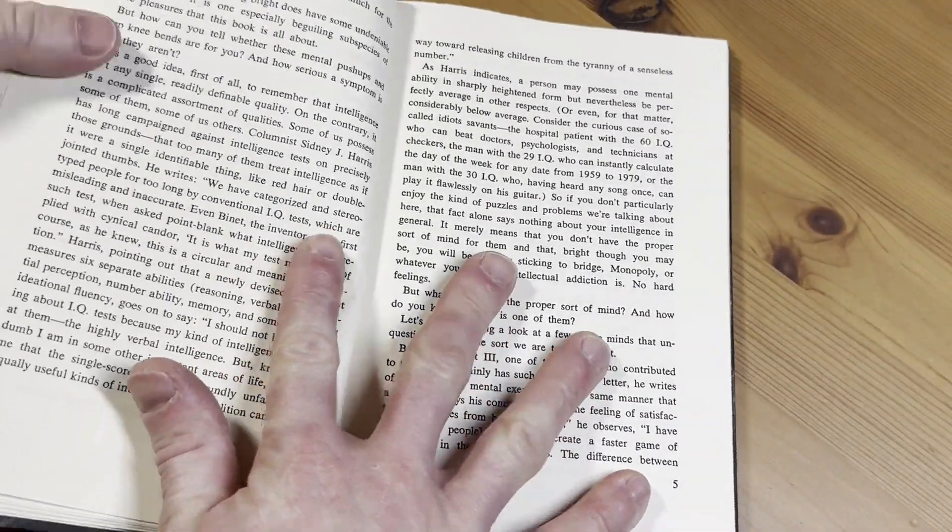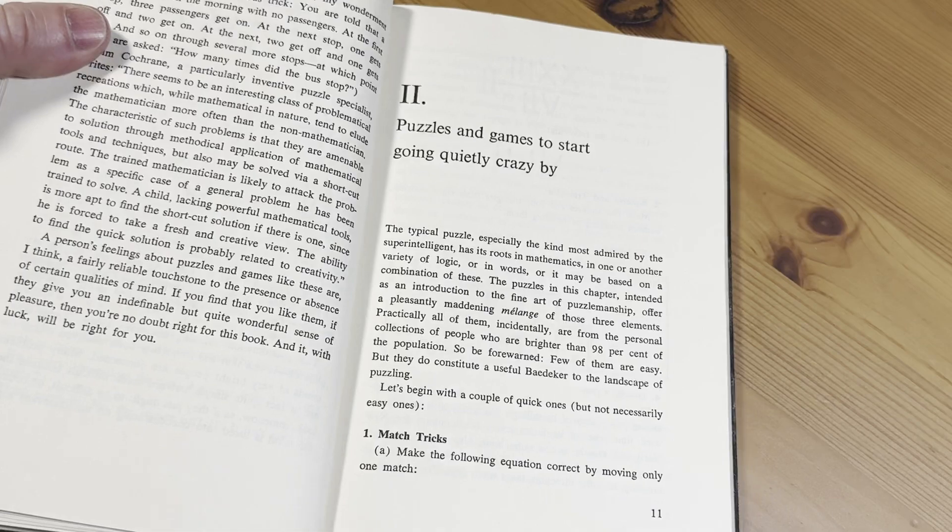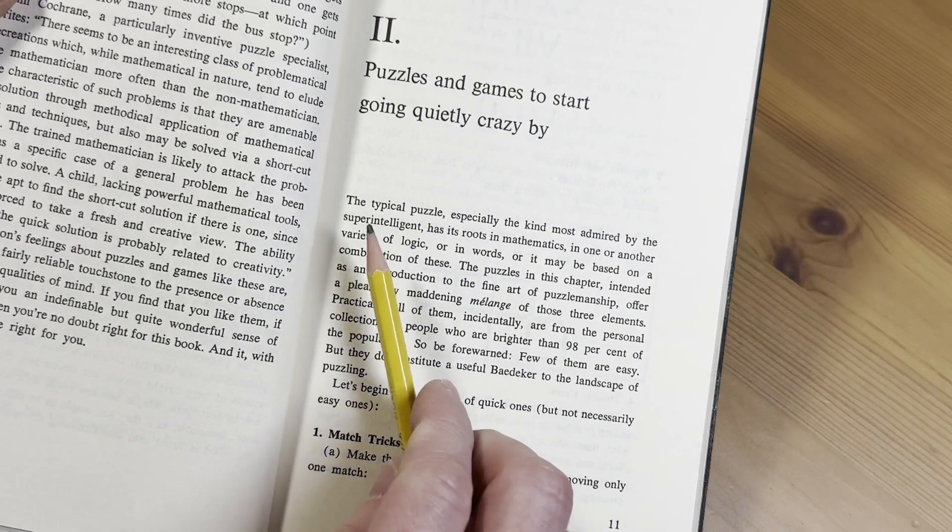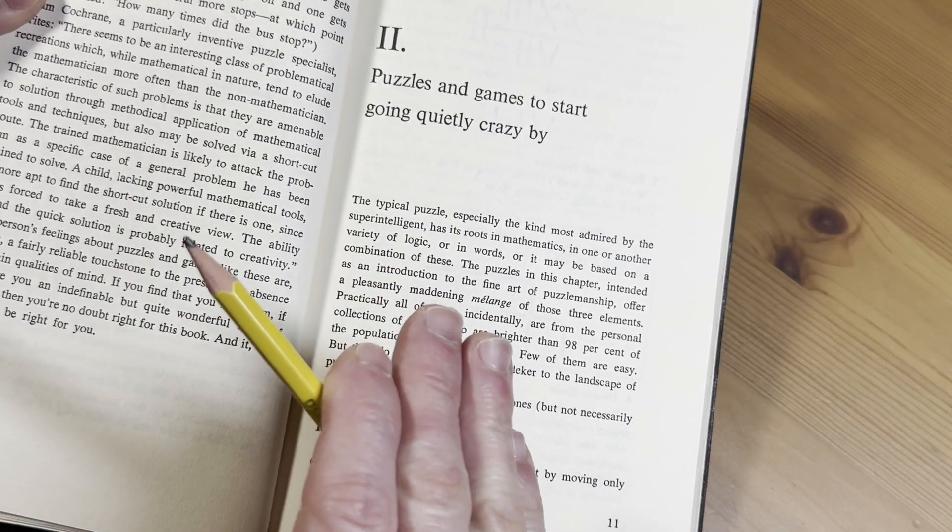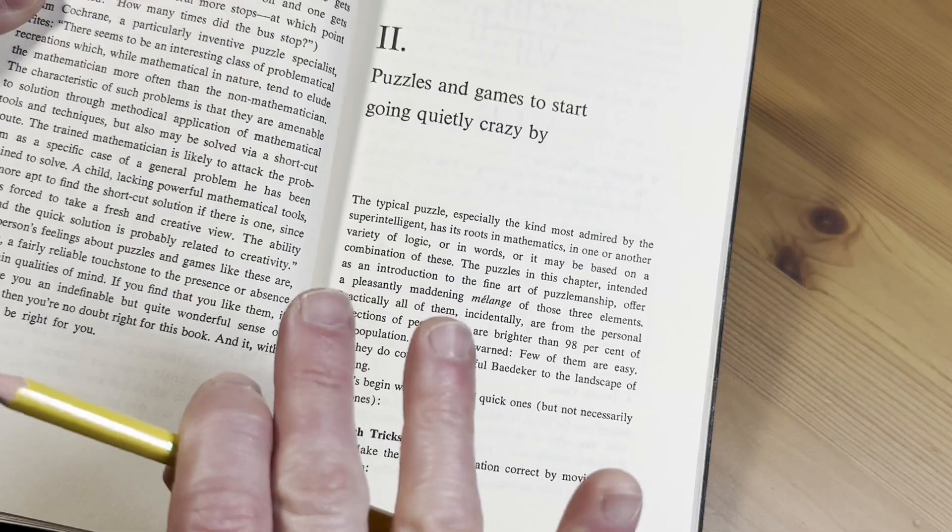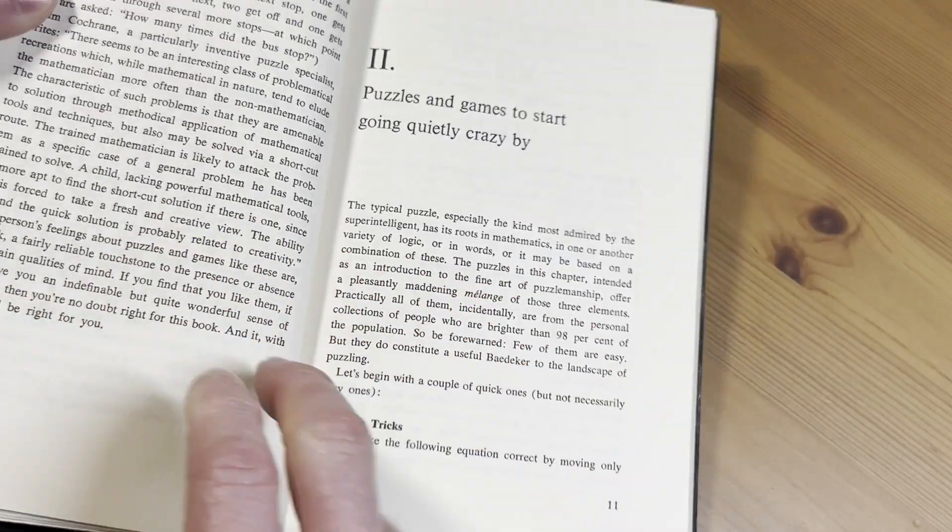I think that this book is written at a level that is a little bit like the language here. Let's read this. There's a lot of different books out there. This is written very intelligently, I guess, because it's games for the super intelligent.